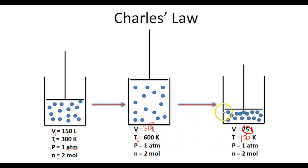The same holds true if we compare these two gases. We have 300 divided by 600, which is one-half. And if we take a look at the final comparison between volume and temperature, 75 divided by 150 is also one-half.